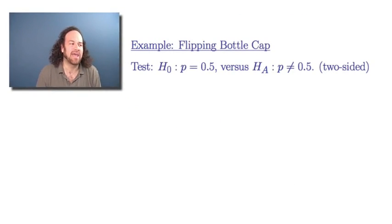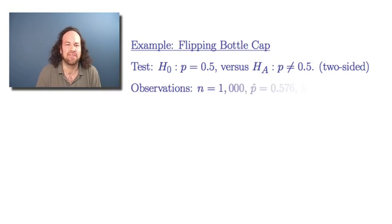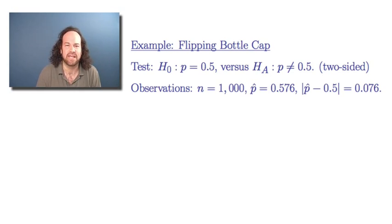As a first example, let's think one more time about flipping that bottle cap. It comes up either red or silver, and we had some data and we wanted to know the probability that it would come up red. For the bottle cap, as far as hypothesis testing, we wanted to test the null hypothesis that the probability of getting red was just 0.5 versus the alternative hypothesis that it was some other value besides 0.5. We had a thousand flips and our estimated fraction of the time we got red was 0.576. That meant the difference between the observed fraction and the hypothesized fraction was 0.576 minus 0.5, or 0.076.